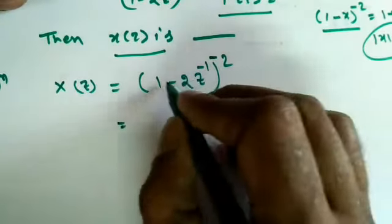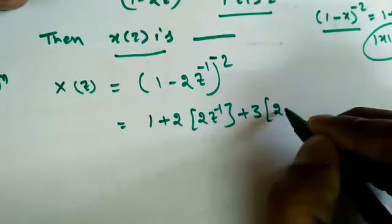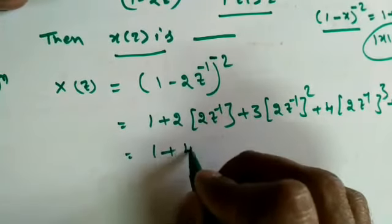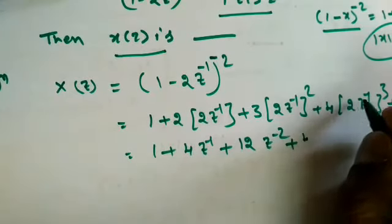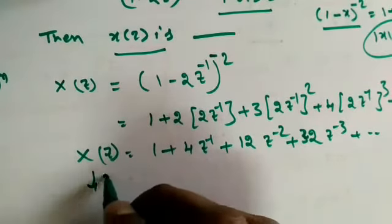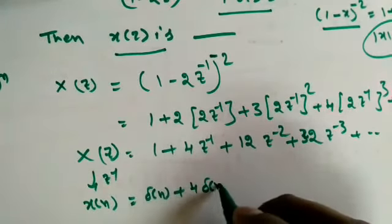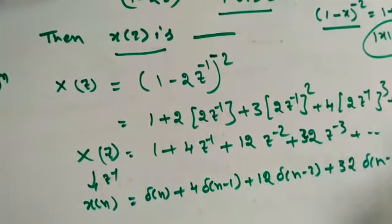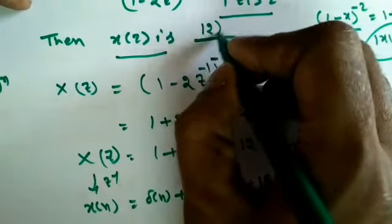Expanding: X(z) = 1 + 4z^(−1) + 12z^(−2) + 32z^(−3) + … Taking the inverse Z-transform: x(n) = δ(n) + 4·δ(n−1) + 12·δ(n−2) + 32·δ(n−3) + … Therefore x(2) = 12.